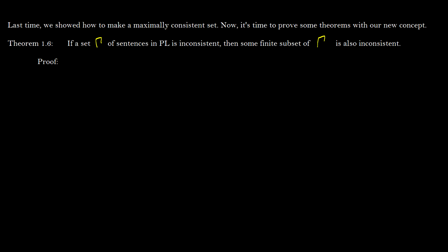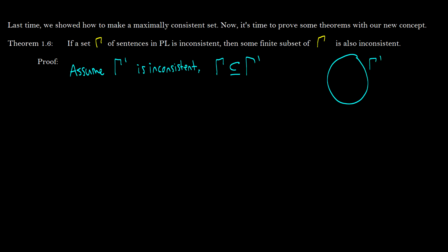To prove this, we assume gamma prime is inconsistent, and that gamma is a subset of gamma prime. So we have gamma prime as our big circle, and gamma is some smaller set inside it. What this says is that if there's a contradiction somewhere in gamma prime, then gamma is also going to have something contradictory in it — we know there's going to be some subset that is inconsistent.